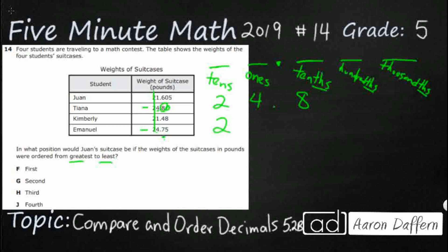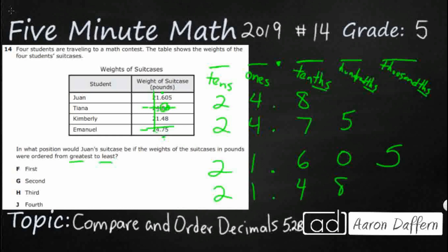So we're going to put twenty-four point eight, then twenty-four point seventy-five. Now let's look at our twenty-ones — one is going to be either third or fourth. Look at the tenths spot again: we've got a six and a four. That six is definitely going to be bigger than the four. So we're going to put twenty-one point six-oh-five, then twenty-one point forty-eight. We can add a zero to show that six hundred five is still larger than four hundred eighty — but at least they all go to the same spot.